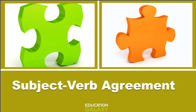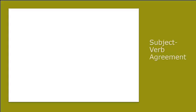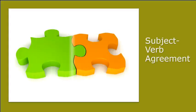Here comes the verb. A verb is an action word — it tells us what the subject is doing. So, this is the subject and that is the verb. If the subject and verb agree with each other, then they fit together nicely, just like you see over here.